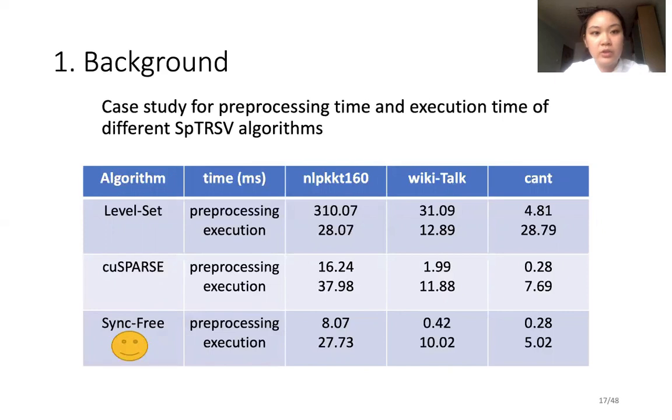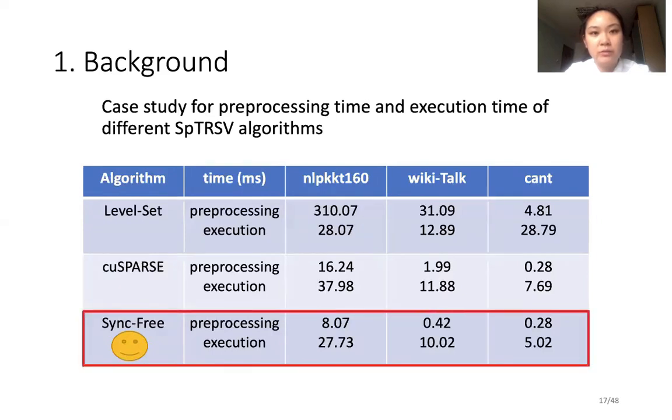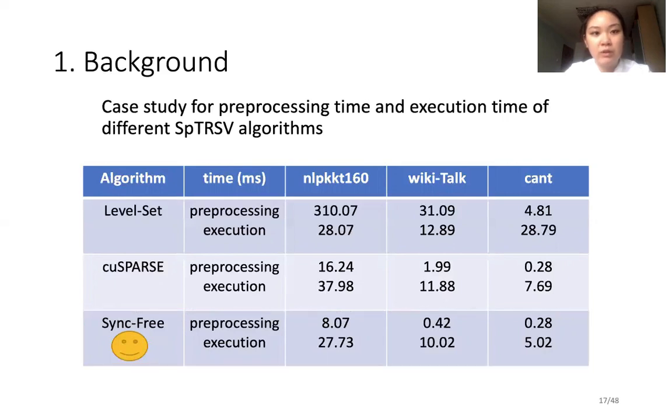In addition to the two algorithms mentioned earlier, the NVIDIA cuSPARSE library also provides functions for sparse triangular solve directly. We summarize the differences between the three algorithms and test their performance with three random sparse matrices. As shown in this table, we can observe that the synchronization-free sparse triangular solve algorithm exhibits short preprocessing time and high performance. In comparison, the preprocessing time of level-set sparse triangular solve algorithms is very long, which greatly limits their applicability.